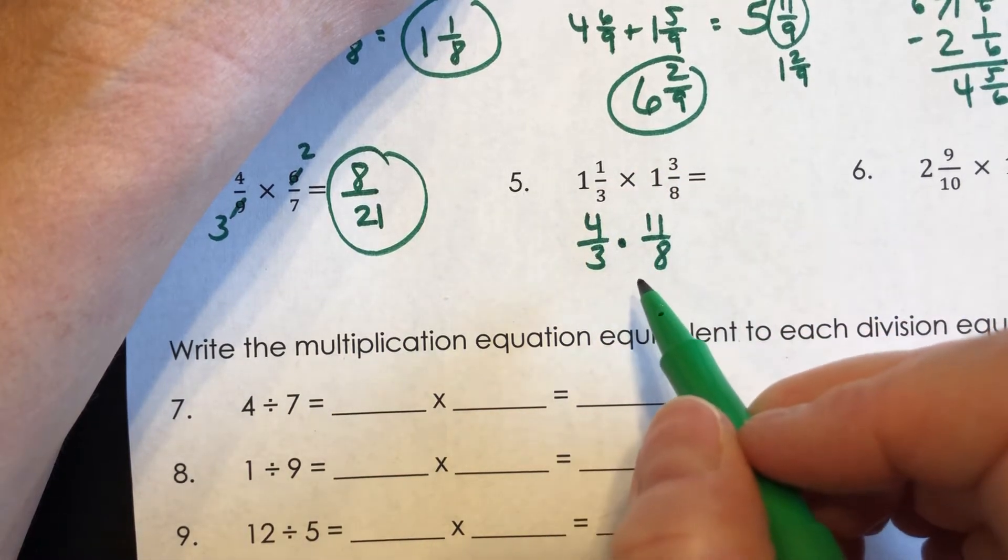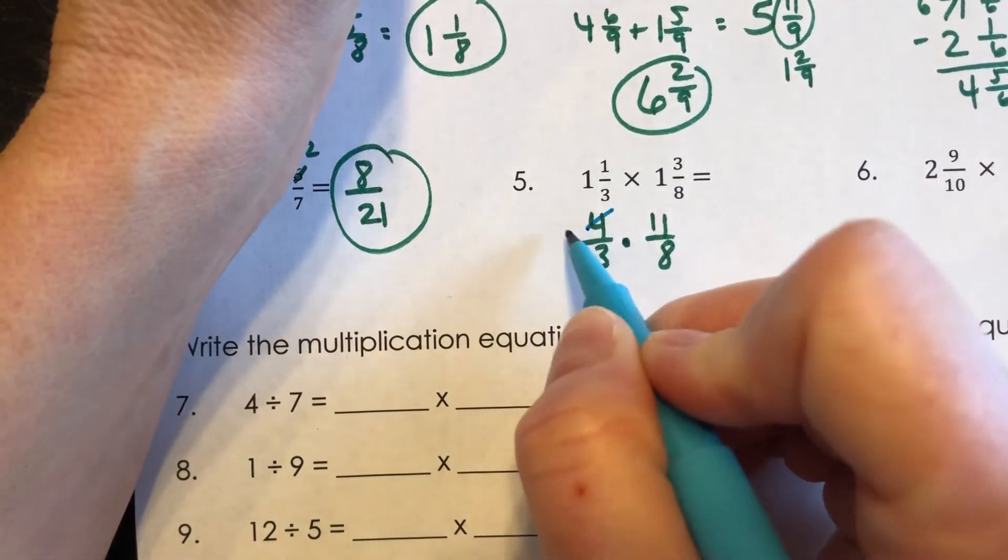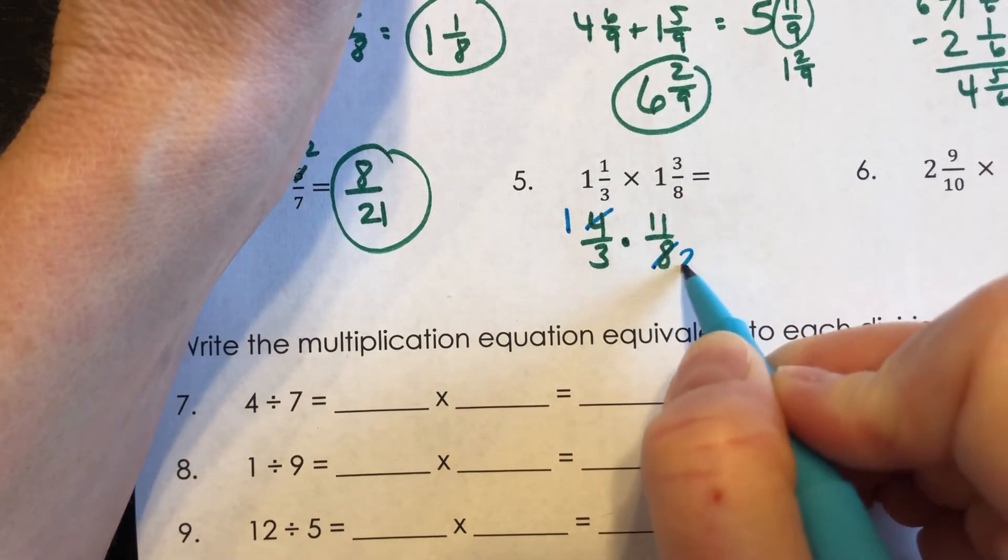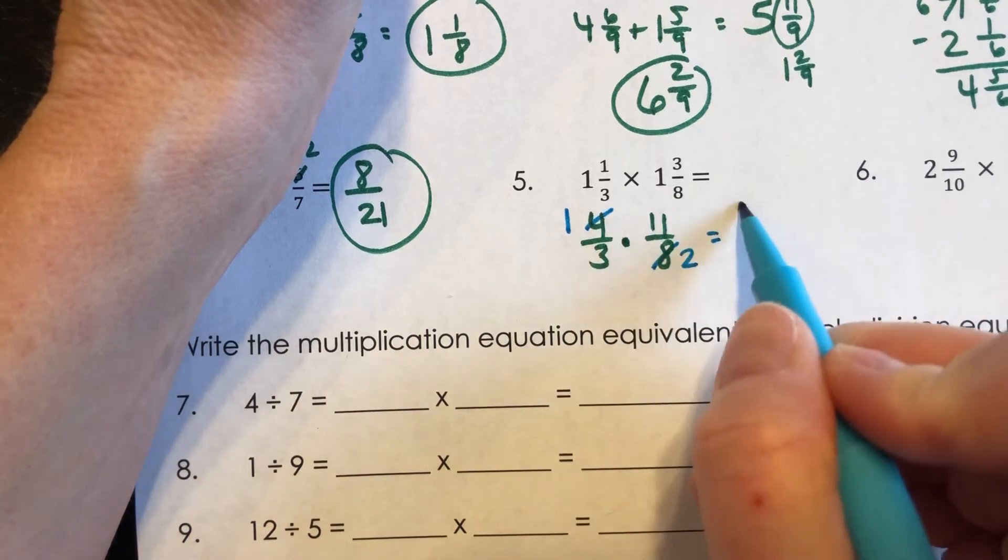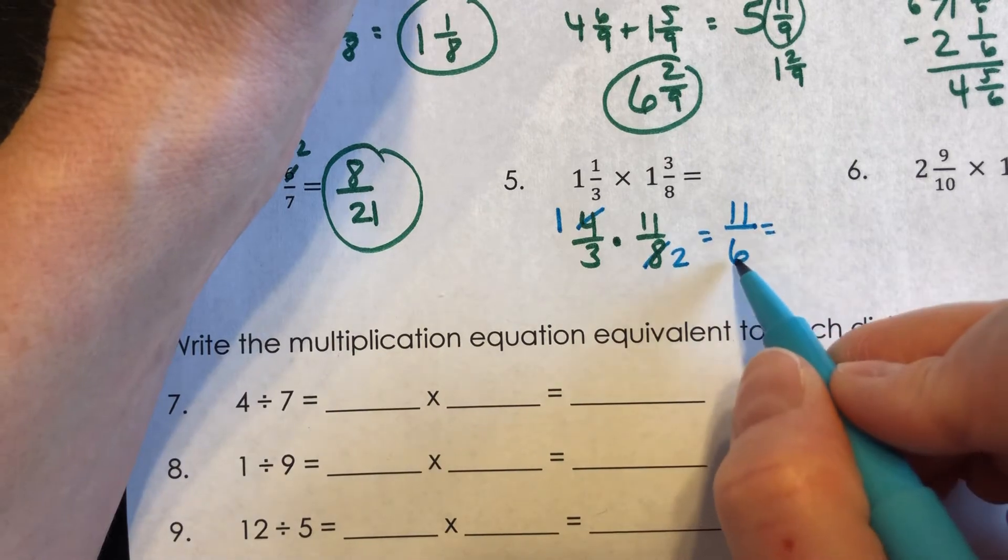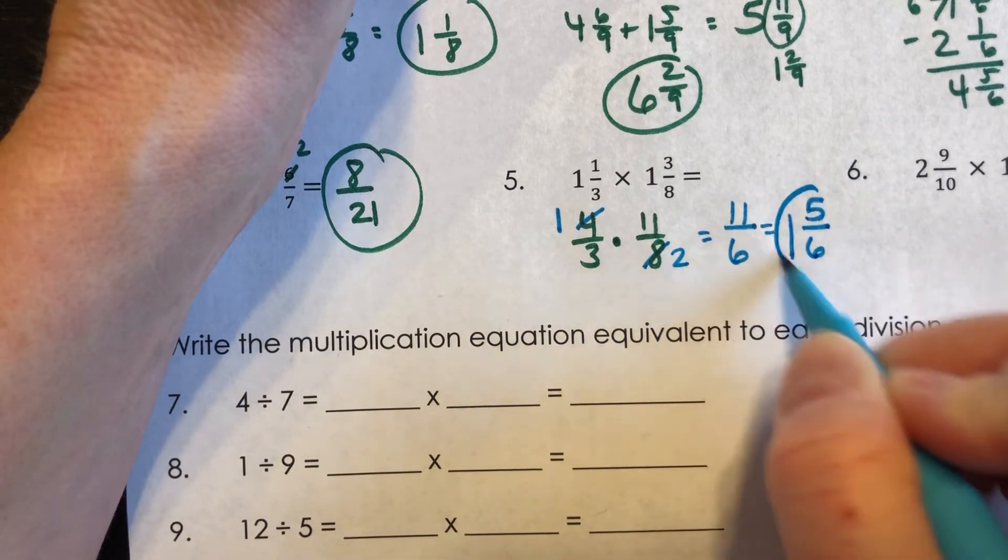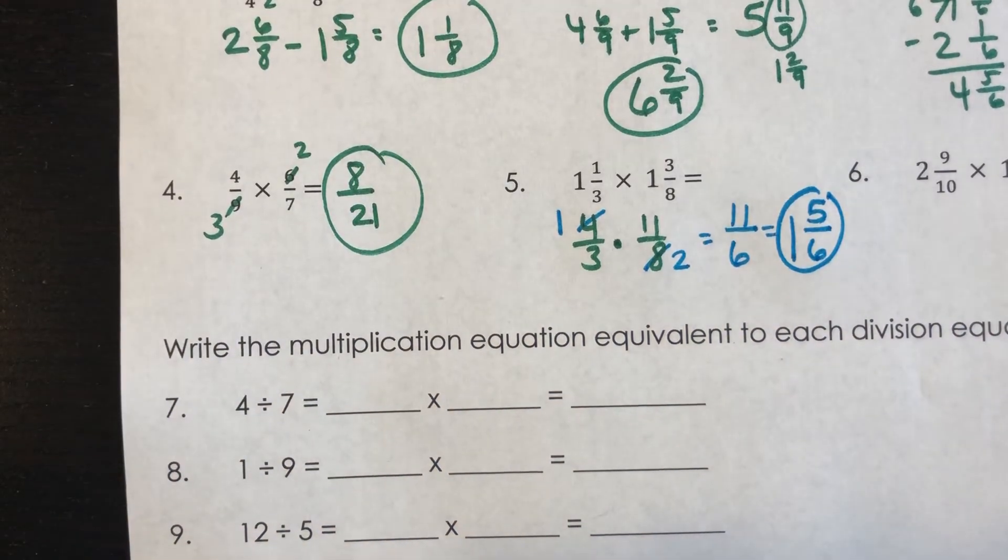And when I look at this, I see, oh, I can cross-simplify. I can cross-simplify the four and the eight. Four goes into four once and into eight twice. So one times eleven is eleven. And three times two is six. Yes, that is improper. Six goes into eleven one time with five left out of six. So one and five-sixths is what you should have.